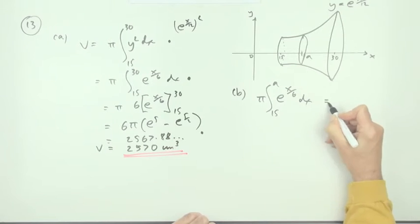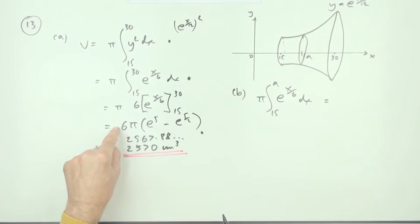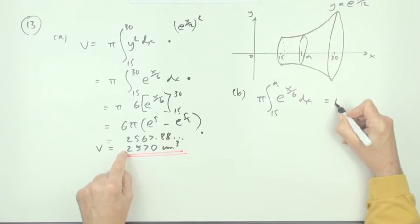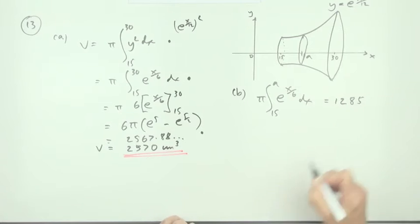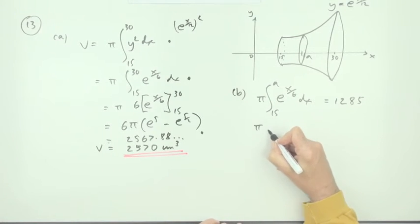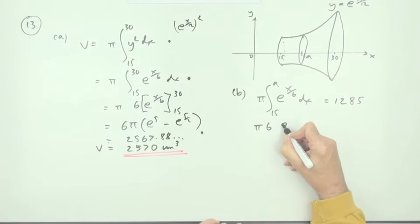So it's pi e to the x upon 6 dx should come to half of this. That would be half of that which is 1285. What does that integrate to then? That'll be pi times 6 times e to the x upon 6, evaluate that from 15 to a.